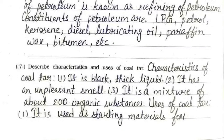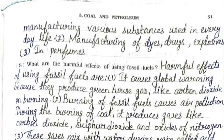Seventh: characteristics of coal tar — it is a black thick liquid, has an unpleasant smell, and is a mixture of about 200 organic substances. Uses of coal tar: it is used as a starting material for manufacturing various substances used in everyday life, including dyes, drugs, explosives, and perfumes.